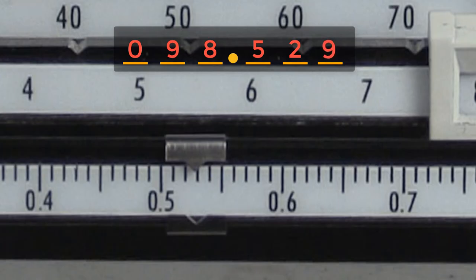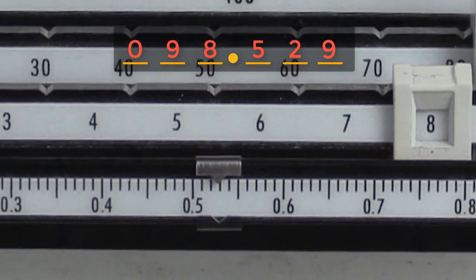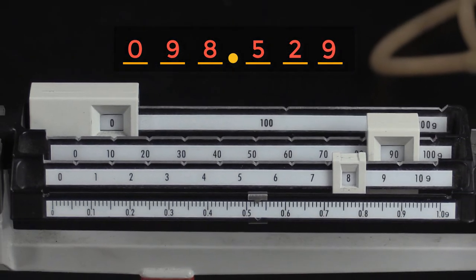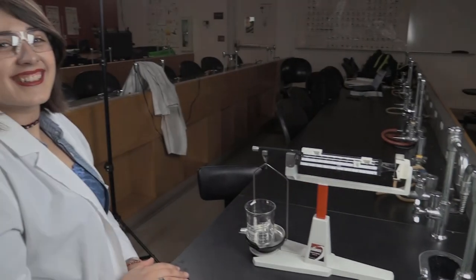This last digit is our doubtful digit, and is the result of the inherent uncertainty in this device. This measurement has five significant figures and three decimal places. Thanks, Ileana.